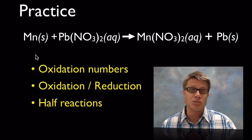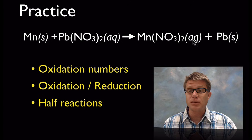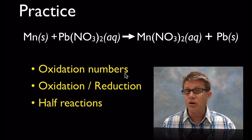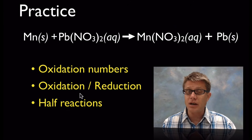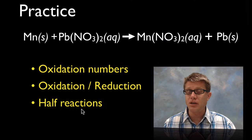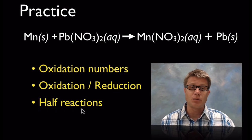Here's a practice problem: manganese plus lead nitrate makes manganese nitrate plus lead solid. Write out the equation, figure out the oxidation numbers of all atoms, determine what is being oxidized and what is being reduced, and then write out the half reactions. You can post your answers in the comments below.